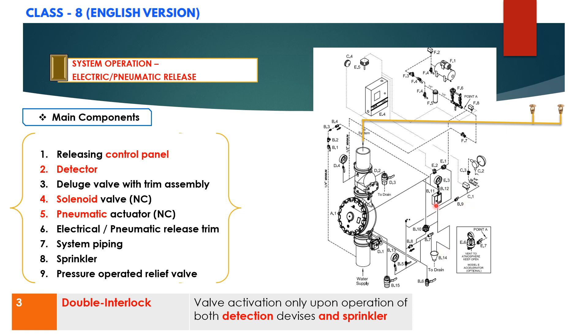Once the pressure is released from the priming line, the deluge valve will open, water will flow into the system piping and the alarm devices.